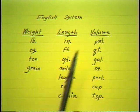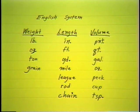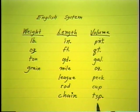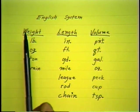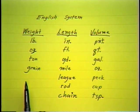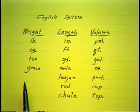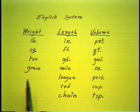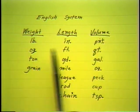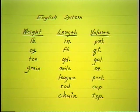In volume we have pint, quart, gallon, ounce, peck, cup, teaspoon, tablespoon, and it goes on and on. That's because over a long course of history England was occupied and occupied itself many countries, and there was much borrowing going on between many countries.